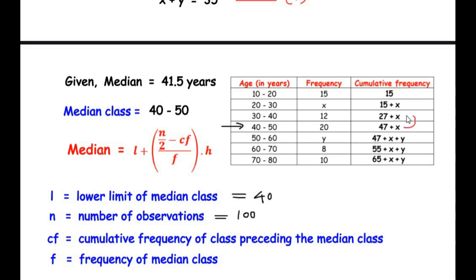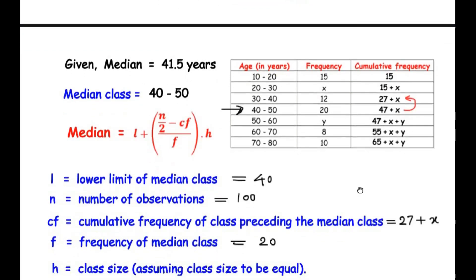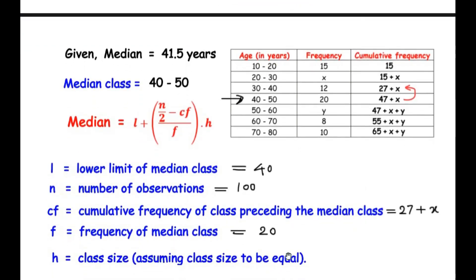The cumulative frequency of the class preceding the median class, that is before 40 to 50, is 27 plus x. F is the frequency of the median class, which is 20. H is the class size; assuming equal class sizes, the upper limit minus the lower limit gives a class size of 10 for all classes. So H equals 10.